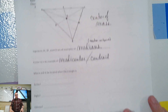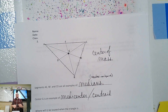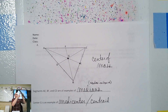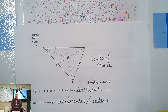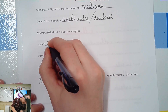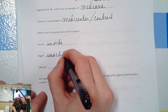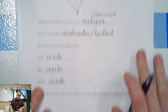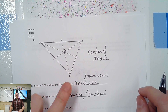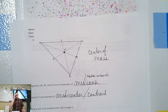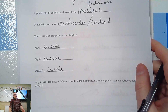When thinking about acute and obtuse and where the center will be — if it's the center of mass, it means it's the balance point. The balance point on an object is usually right in the middle if it's equally weighted. Will you ever have a balance point that isn't on the object? No. So if this is the center of mass, is it ever going to be outside the triangle? No — it's always going to be inside.